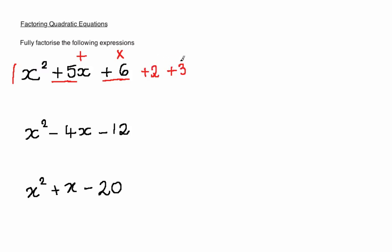Now that you've discovered what the two numbers are, you simply pop them into two separate brackets. In each bracket, you must have an x at the start, and then you place each of these numbers in each bracket. So in this one I'm going to put the plus 2 in, and in this one I'm going to put the plus 3 in. This is your answer.